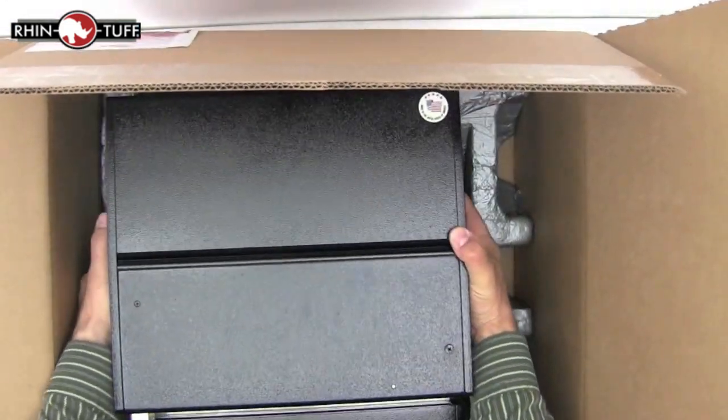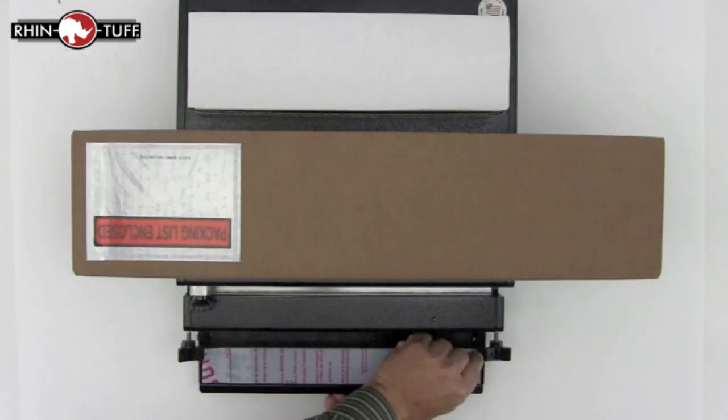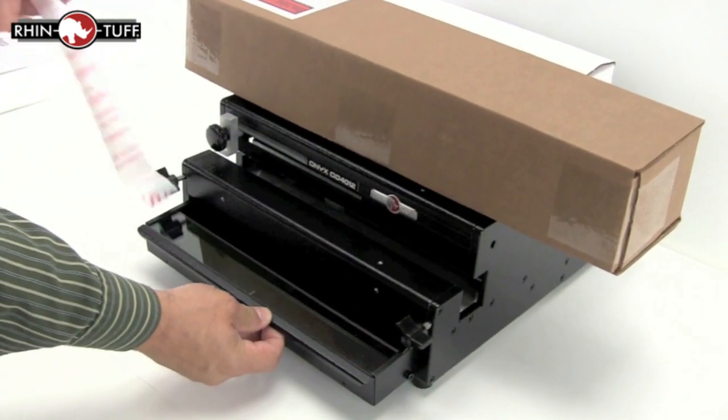All RhinoTuff Onyx punches are very heavy so get some help to pull it out of the box. Remove the tape that protects the clear cover to the chip tray.